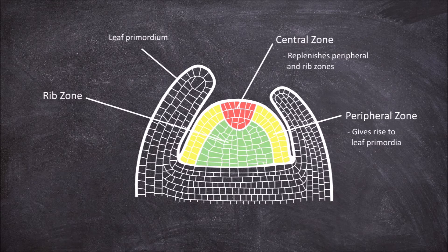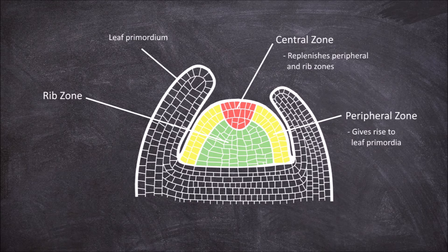The rib zone is found further inside the meristem and under the central zone. Cell division in this zone gives rise to the internal tissues of the stem.